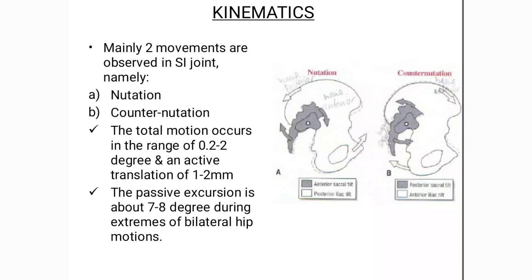The passive excursion is about 7 to 8 degrees during extremes of bilateral hip motion. The SI joint is a joint of stability, not a joint of mobility — a very small amount of movement is available at the SI joint.